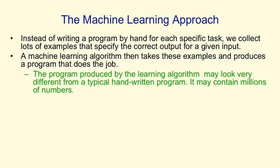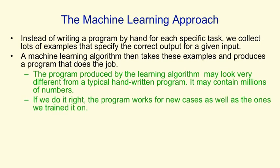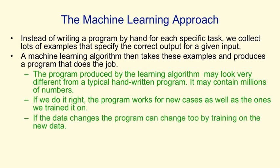For example, it might contain millions of numbers about how you weight different kinds of evidence. If we do it right, the program should work for new cases as well as the ones it's trained on. And if the data changes, we should be able to change the program relatively easily by retraining it on the new data.